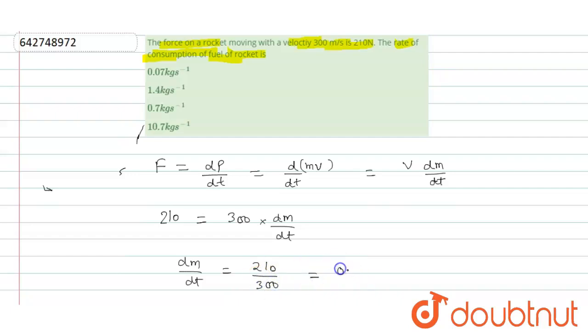Which is equal to 0.7 kg per second. Right, so option c is correct.